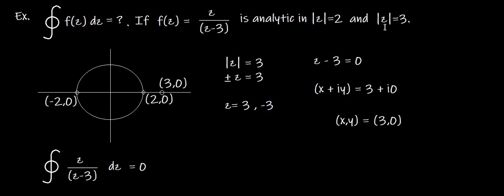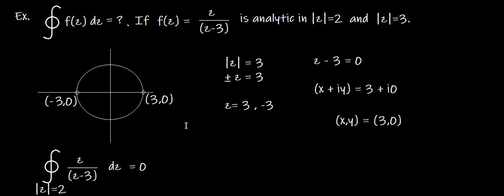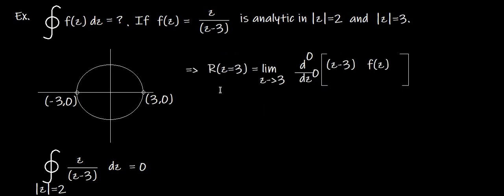Now for the second case, |z| = 3. Evaluating the modulus gives z = ±3. Taking the denominator and equating to zero, the point z=3 lies on this circle. So there is a residue to consider. The residue R(z) at z=3 is computed with limit z→3, where a=3.